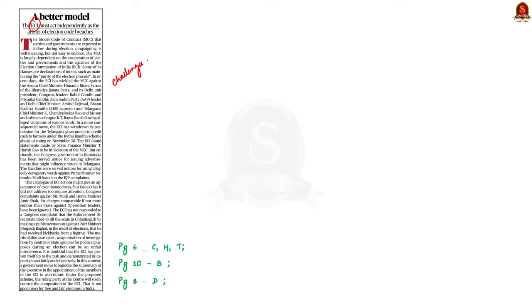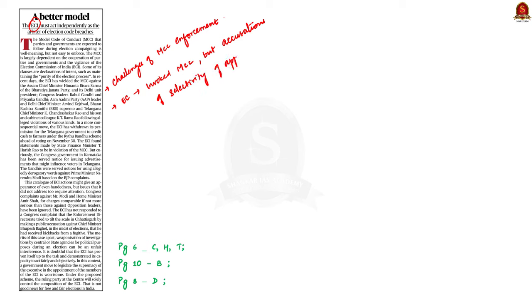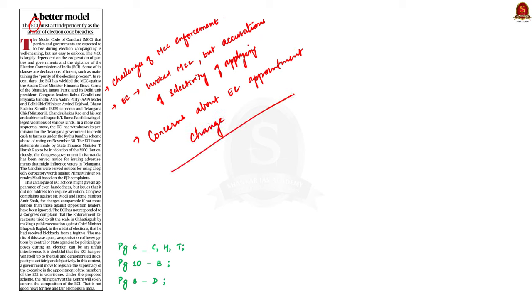Look at this editorial article about the Election Commission. This article discusses the challenges of enforcing the Model Code of Conduct or MCC during election campaigns in India. It mentions recent instances where the Election Commission of India invoked the MCC against several political parties, including various CMs and national level figures for alleged violations. The article criticises the selectivity of ECI in responding to complaints, particularly in cases involving the ruling party. It also raises concerns about the proposed Chief Election Commissioner and Other Election Commissioners (Appointment, Conditions of Service and Terms of Office) Bill 2023, which would give the ruling party significant control over appointing ECI members, potentially jeopardizing the independence of the commission and affecting the fairness of elections.